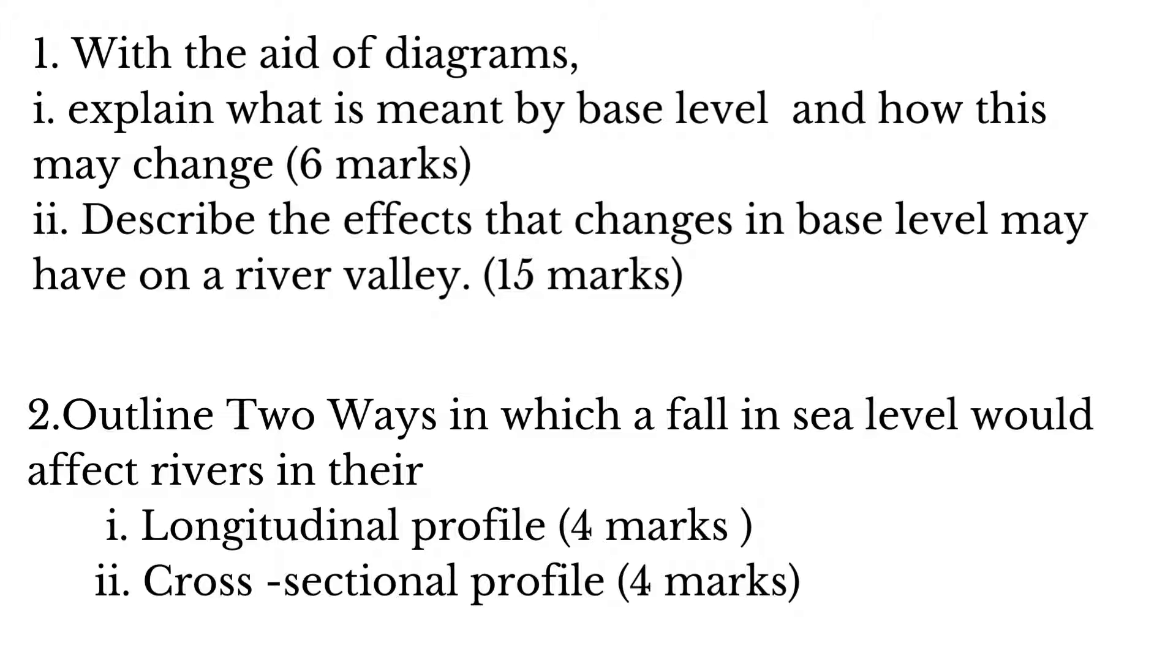For question one, part one, you need to point out that base level can both rise as well as fall and can be the result of both isostatic as well as eustatic sea level change. In part two, you are expected to talk about how the features such as incised meanders, waterfalls, and so on, form as a result of changes in base level. Bear in mind also that features can also form due to positive sea level change.